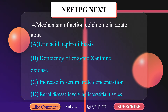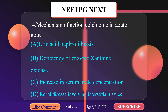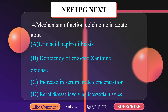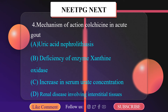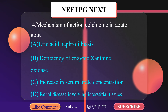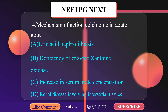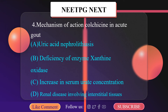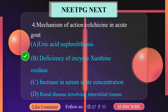Mechanism of action of colchicine in acute gout is: A. Uric acid nephrolithiasis, B. Deficiency of enzyme xanthinoxidase, C. Increase in serum urate concentration, D. Renal disease involving interstitial tissues. Gout is a hereditary disease associated with increased serum uric acid due to increased production or decreased excretion of uric acid. It is caused by a lack of the enzyme needed to completely metabolize purines for renal excretion. The correct option is B — Deficiency of enzyme xanthinoxidase.